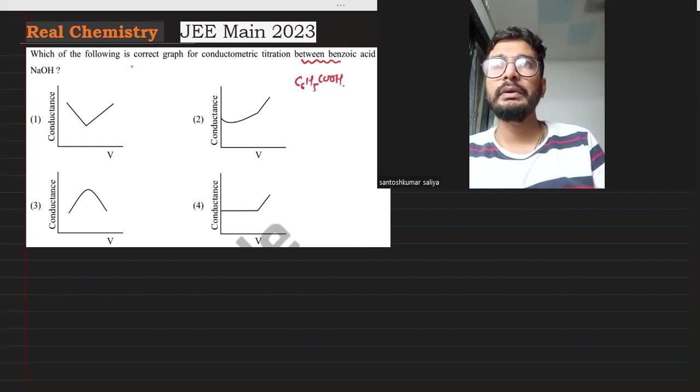C6H5COOH and NaOH. NaOH is a strong base. This is a titration.